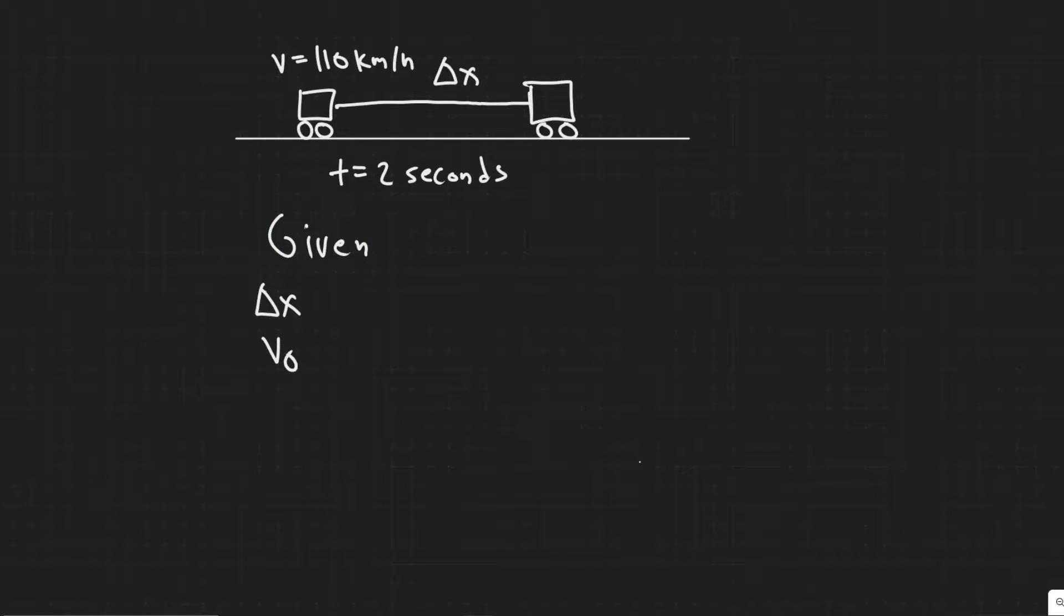Delta x, v sub zero, v, a, and t. And I'll break down each of these. But essentially what delta x is is basically the distance you travel. So how far you move.